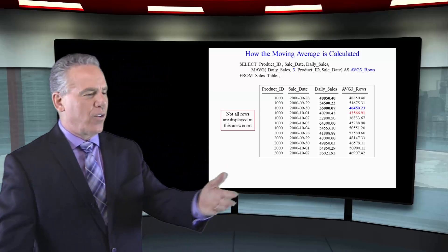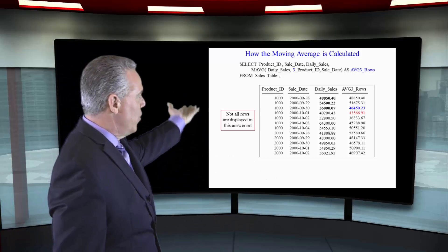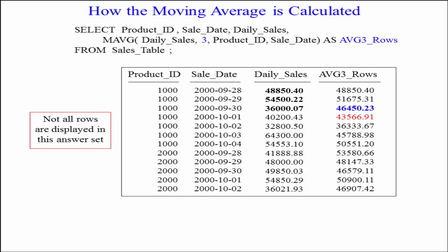And then after the third row we got our 46,450, which you can see I've bolded the first three rows. That's a true moving average of three.